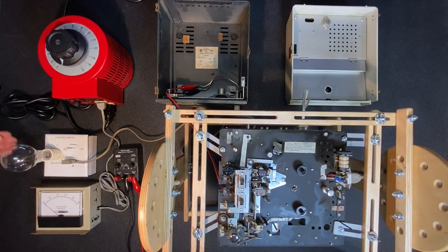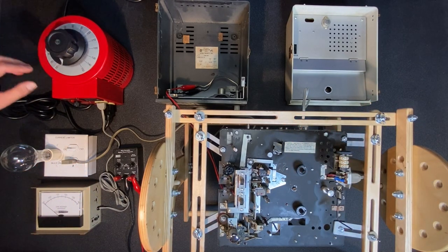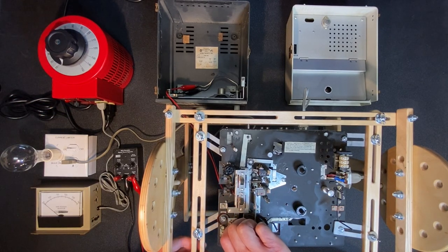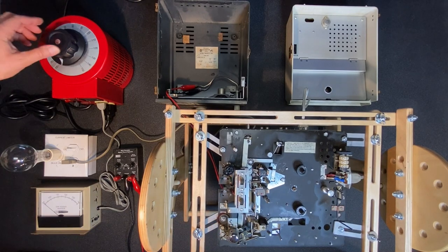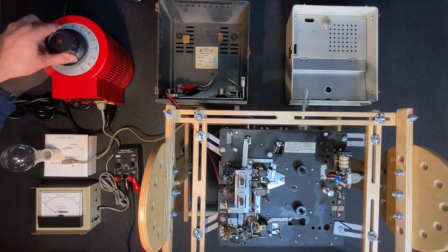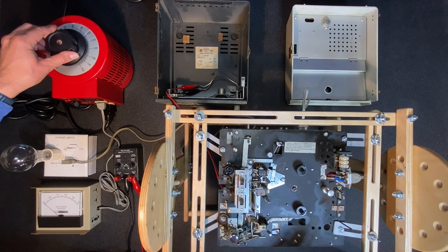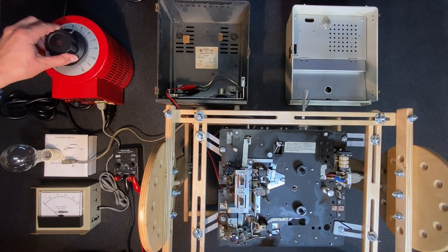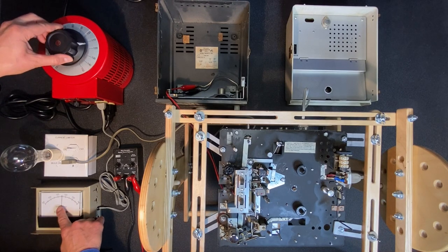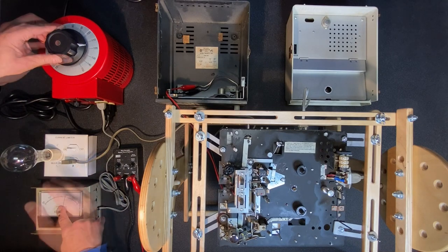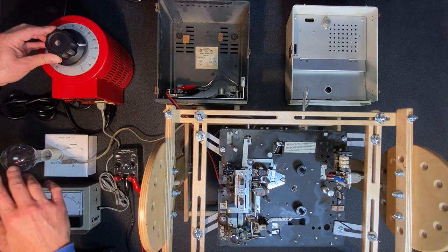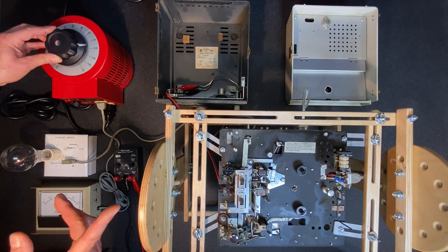Turn on the current limiter, put our Variac to zero, power on, let's put our player in the play mode, and let's slowly bring up our voltage. Okay, so far so good. We can hear that our motor is turning. Let's continue. Great, we're at 120 volts, I see no shorts, and we're getting some sound from our speakers.